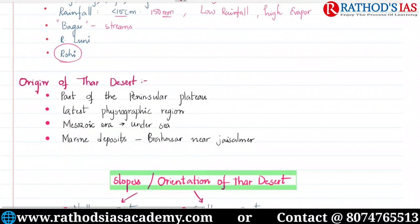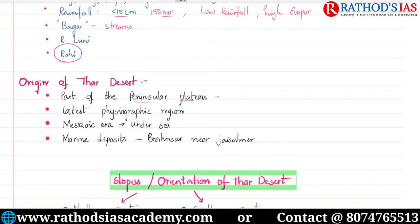Now let us see the origin of the Thar desert. The rock structure of the Thar desert is mainly part of our peninsular plateau. However, this region went into extreme climatic conditions, and because of these extreme climatic conditions and surface geomorphic features, it looks like other deserts — but it actually belongs to the peninsular plateau region.